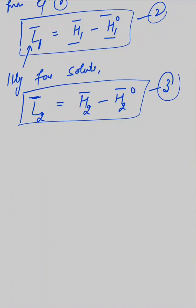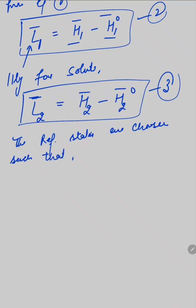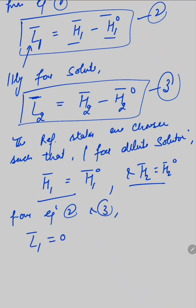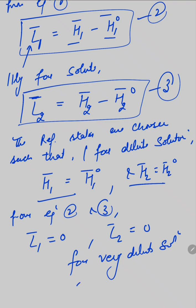The reference states are chosen such that the reference state is for very infinite dilute solutions. That means for dilute solutions, h1 bar is actually equal to h1 naught and h2 bar is equal to h2 naught. So, according to these equations, from equations second and third, you can note that l1 is equal to 0 and l2 is equal to 0 for very dilute solutions of solute in the solvent.